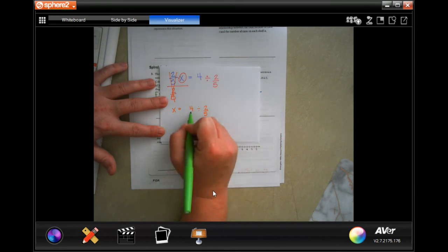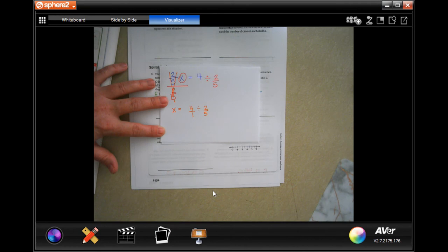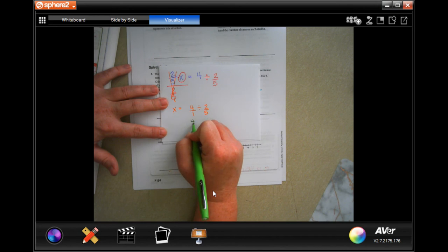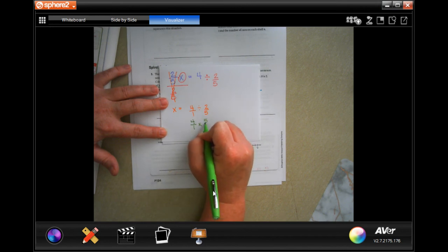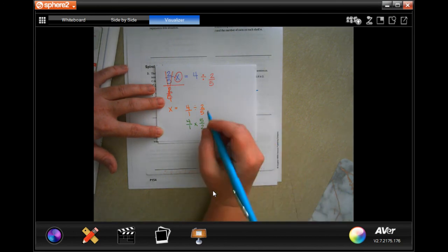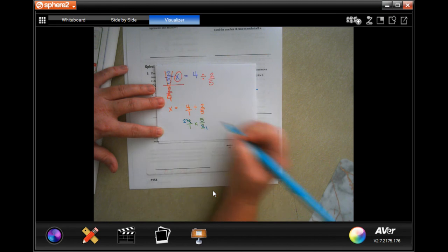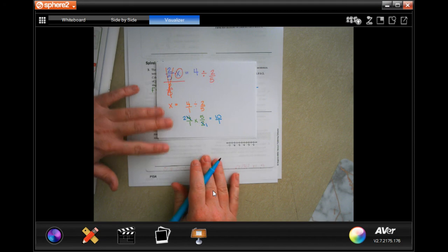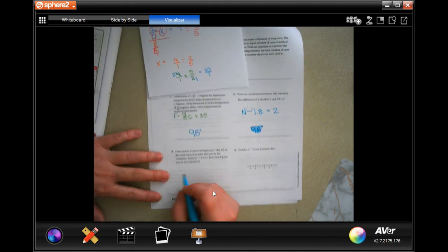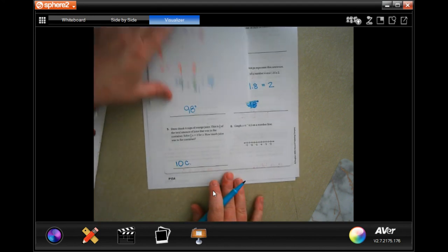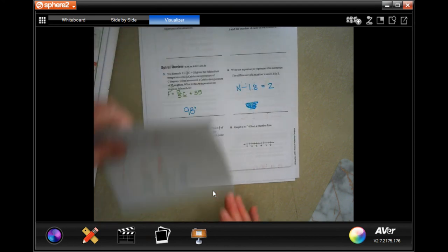So I'm going to put that 4 over a 1 for starters just so I have two fractions that I'm working with. Now, when we're dividing fractions, we keep, change, and flip. Now, I'm going to go ahead and cross cancel because 2 goes into 2 once and 2 goes into 4 twice. And then, I'm going to multiply straight across. It gives me 10 over 1, which is just 10. 10 cups. Pause it. Make sure you write down your work.